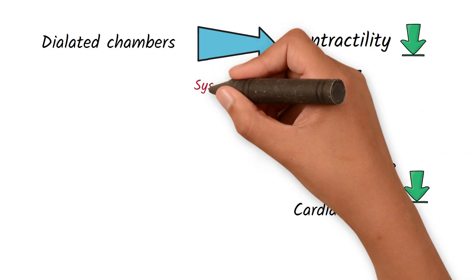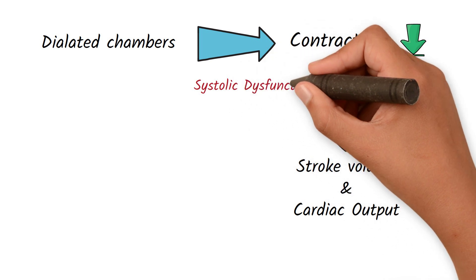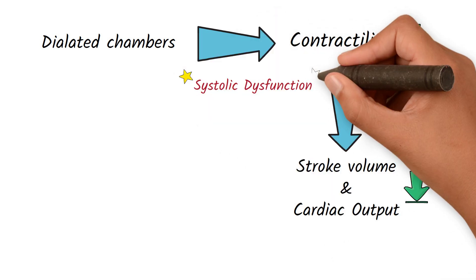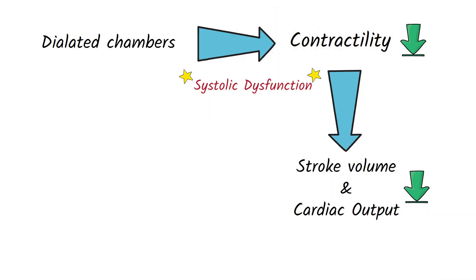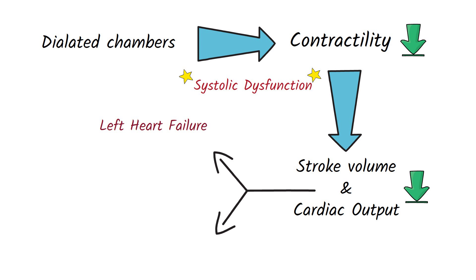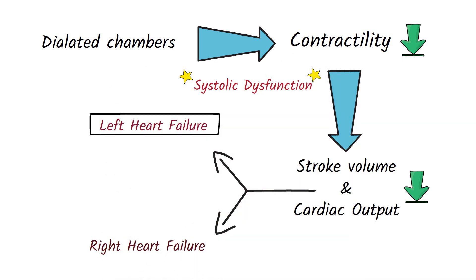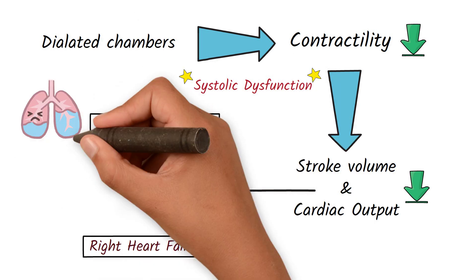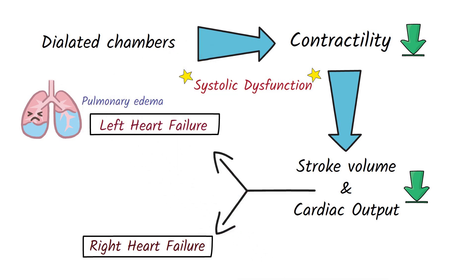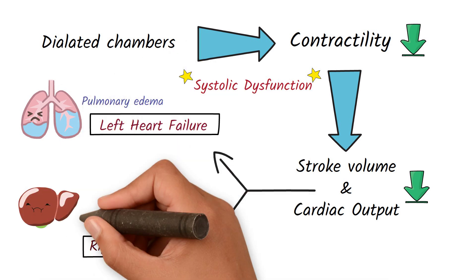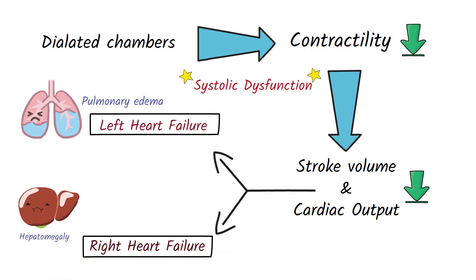Dilated cardiomyopathy is a systolic dysfunction because the heart is unable to contract and push blood out, so the patient will present with features of left and right heart failure. Left heart failure features include pulmonary edema, so the patient will experience paroxysmal nocturnal dyspnea and orthopnea. Right heart failure features include hepatomegaly and pedal edema.